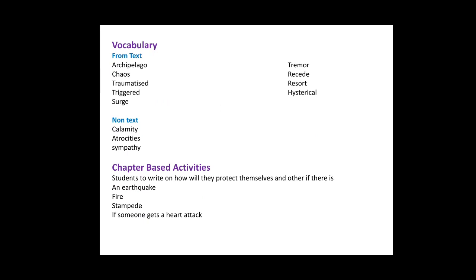For vocabulary, apart from those given in the text, I will also give some extra vocabulary words like calamity, atrocities, sympathy, etc. After teaching the chapter, I will have students do chapter-based activities — for example, students will write about how they would protect themselves and others if there is an earthquake, fire, stampede, or if someone gets a heart attack.